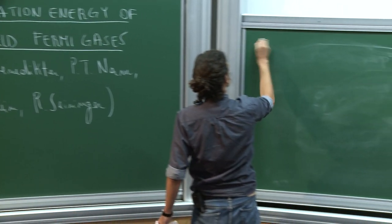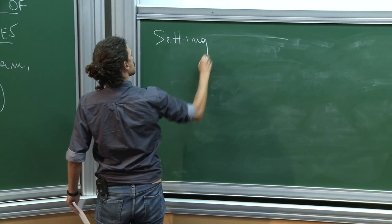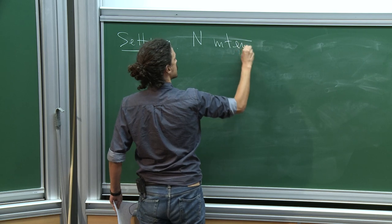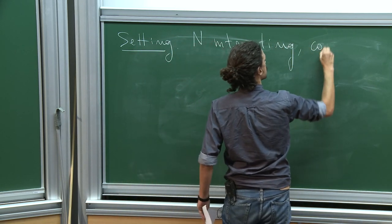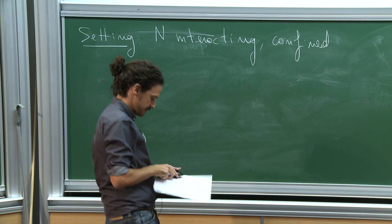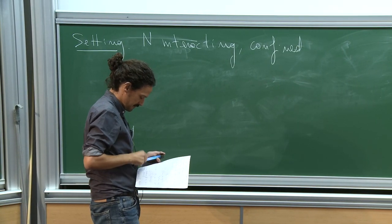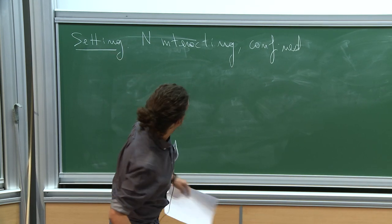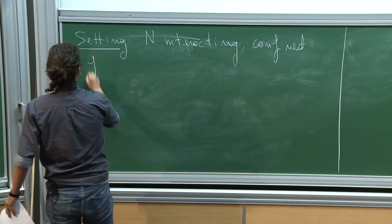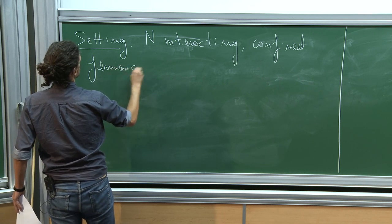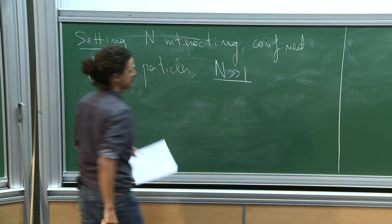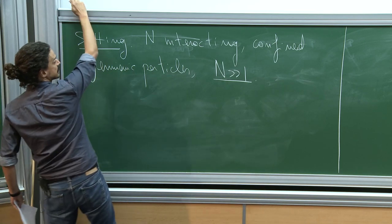The setting is about N interacting and confined fermionic particles, where N is going to be a large number — eventually taken to infinity — but the system stays confined. So it's a mean field regime.